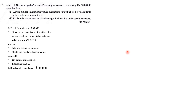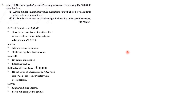Bonds/Debentures — 10 lakhs: He can invest in government or AAA-rated corporate bonds to ensure safety with decent returns. Merits: regular and fixed income, lower risk compared to equities. Demerits: no capital appreciation and limited liquidity in the secondary market.